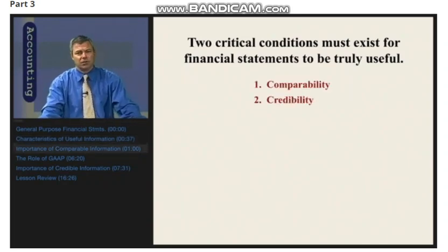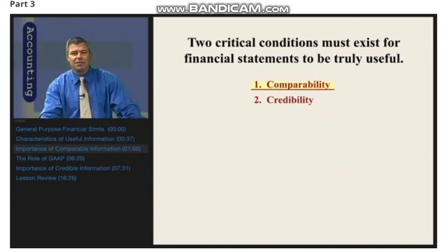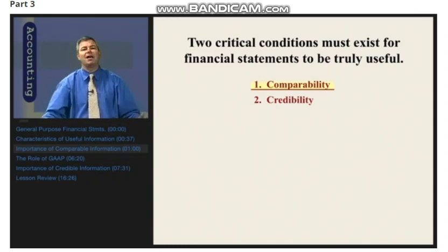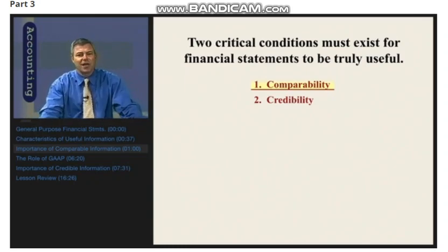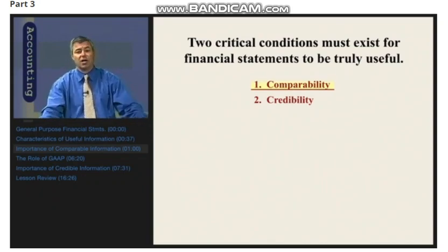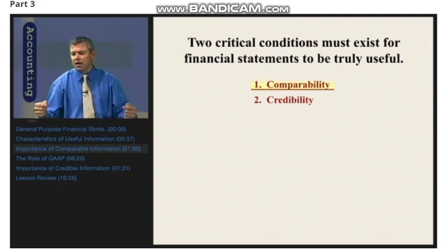In terms of comparability, what I'm talking about is that comparability really refers to the need for companies to prepare and present their financial statements in the same basic way, utilizing the same basic formats for presentation and the same basic accounting methodologies as other companies. The reason for this is that investors and creditors are faced with choices. It's not just a decision about whether or not they're going to provide a loan or capital contribution, but they have other options. A banker might have a loan application not only from your business, but from a variety of different businesses. The investment and credit-making decision is really typically a choice between investment or credit alternatives.